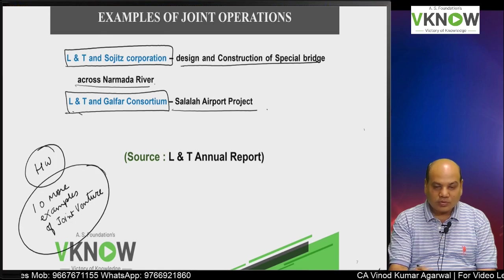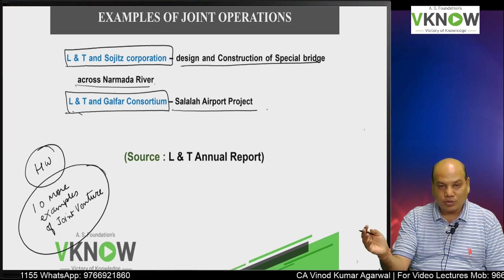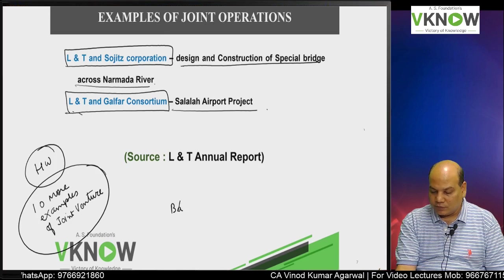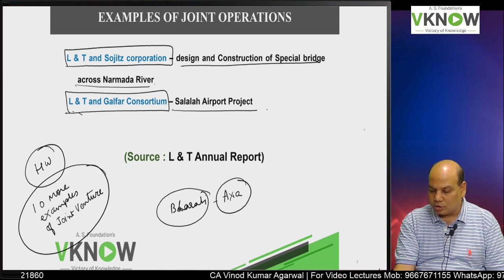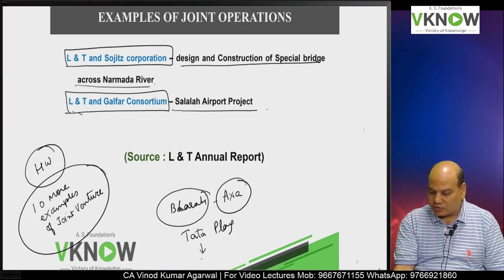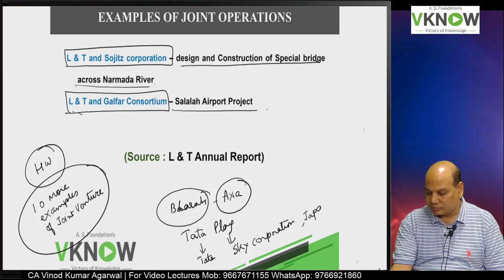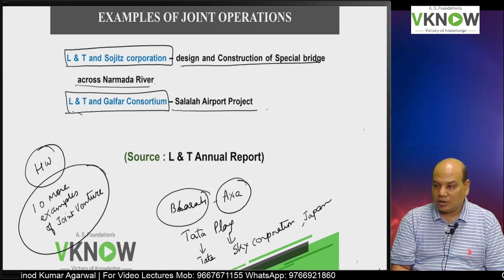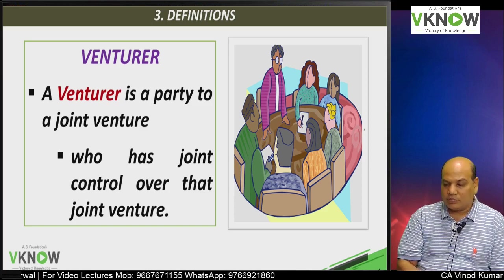You have to do the homework honestly. You have so many resources at your disposal. If you look around, there are so many companies. Bharti and AXA Group have formed a joint venture for insurance business — Bharti AXA Insurance Company. Tata Play is a joint venture between Tata Group companies and Sky Corporation Japan. There are many joint ventures around you; you have to find them. Next, who is a venturer?